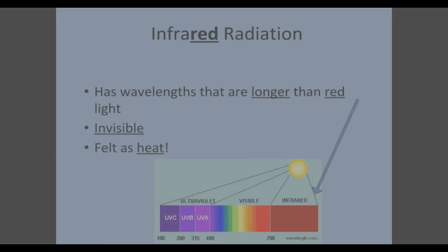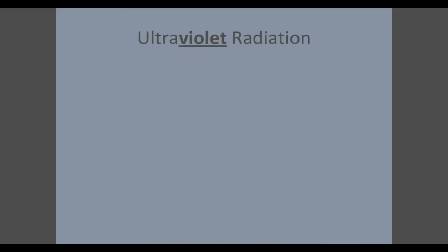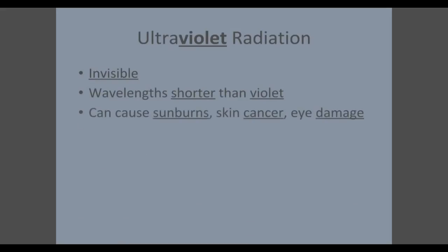Infrared radiation is our second type we're going to talk about. Take a second to circle or underline the red in the word infrared. Infrared radiation has wavelengths that are longer than red light. It's invisible, and this is what we feel as heat. Now take a minute to underline or circle the violet in ultraviolet radiation. This too is invisible, wavelengths that are shorter than violet. And this is the type of light that causes sunburns, skin cancer, and eye damage like glaucoma.